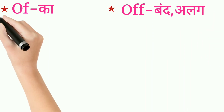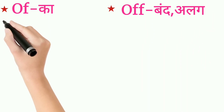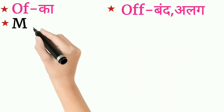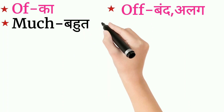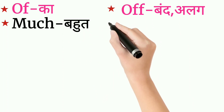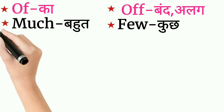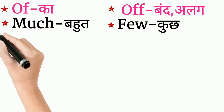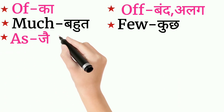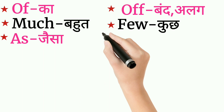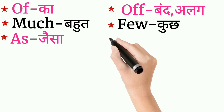'Would develop of' means bandh — ya alag karna. 'Much' means bohut. 'Few' means kuch. 'As' means jaisa.